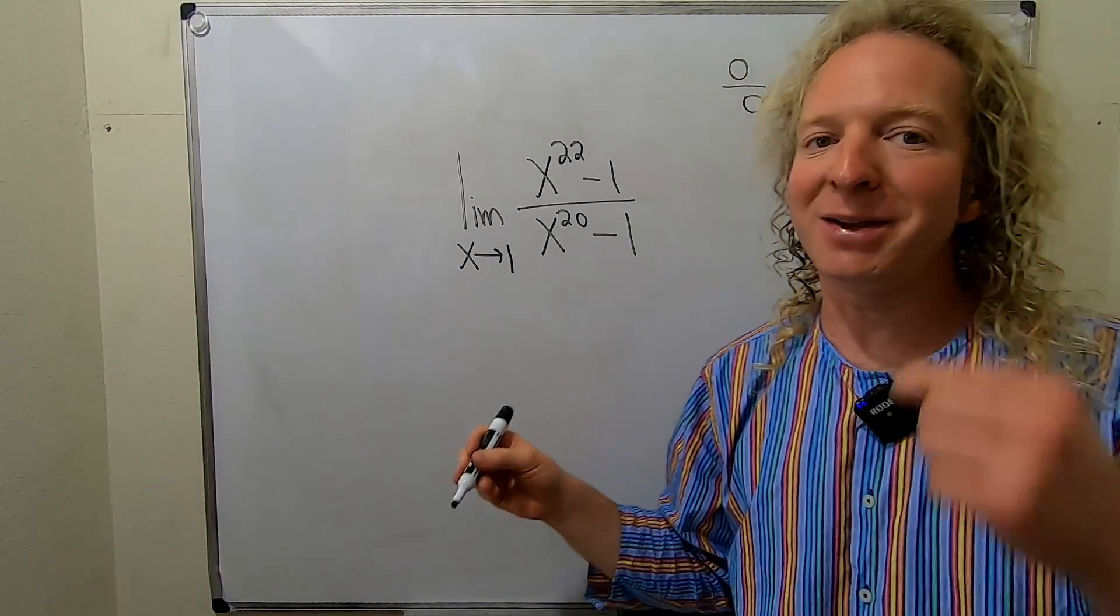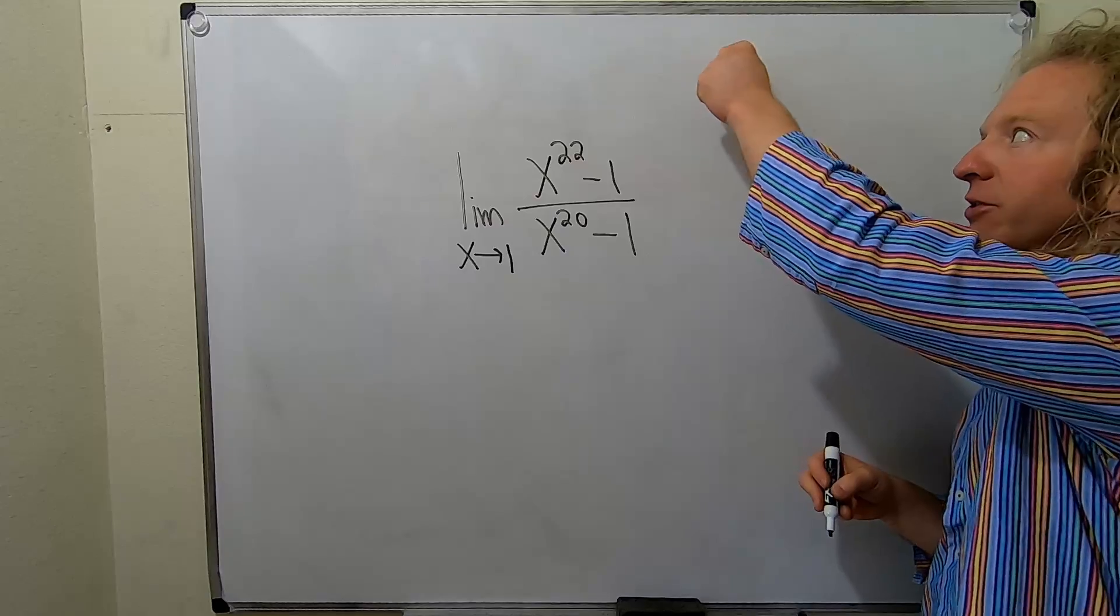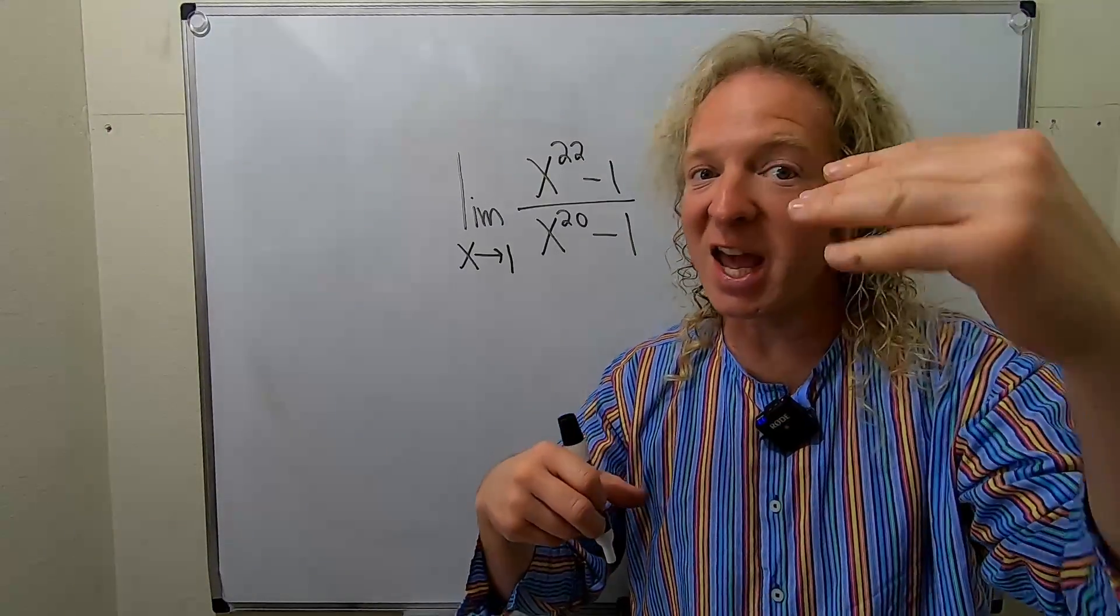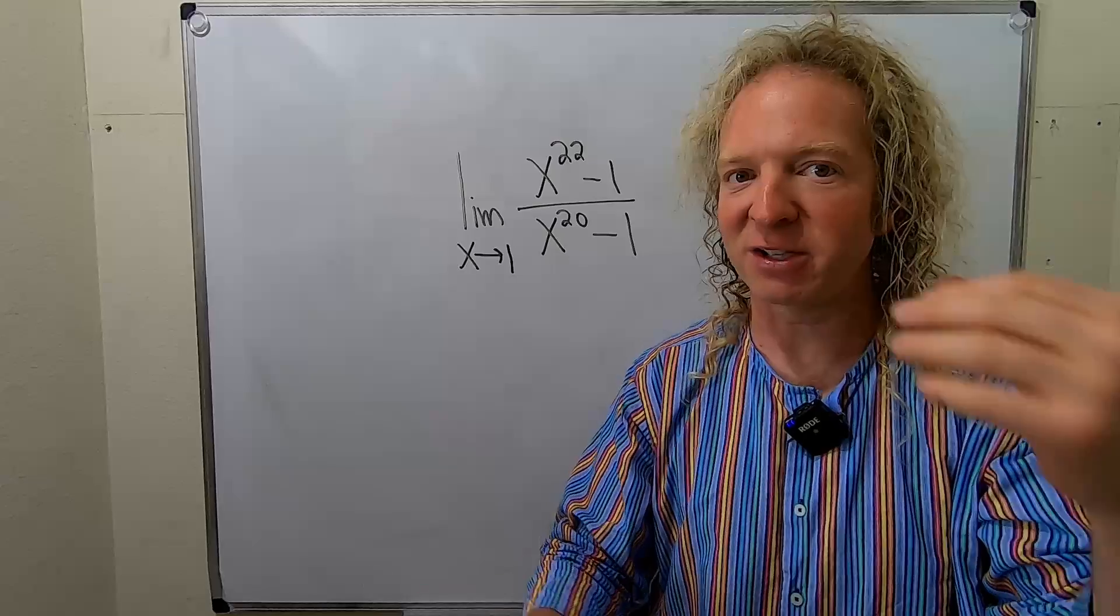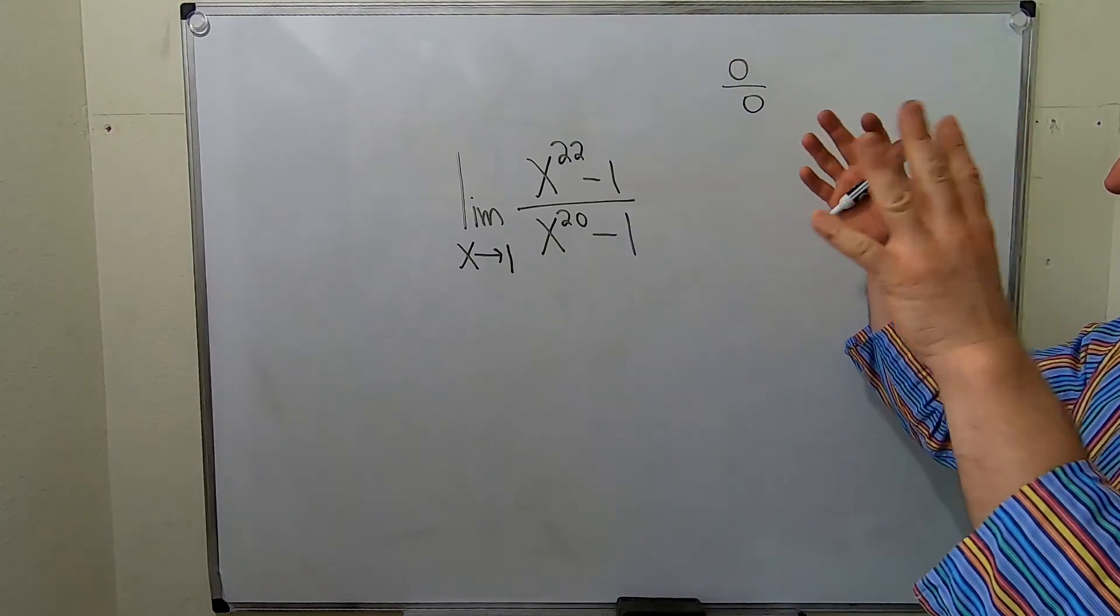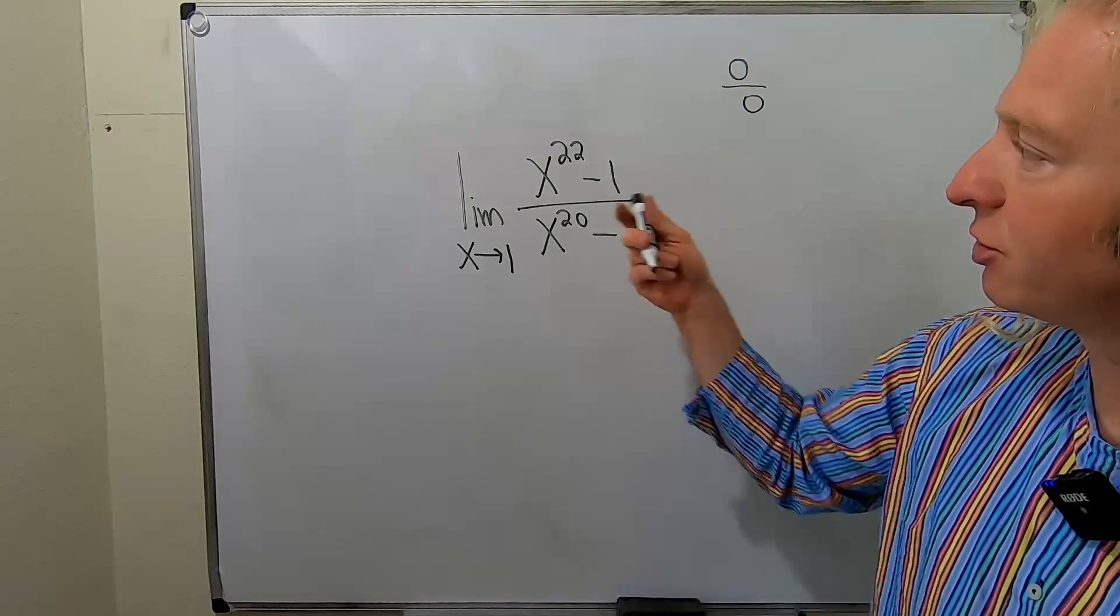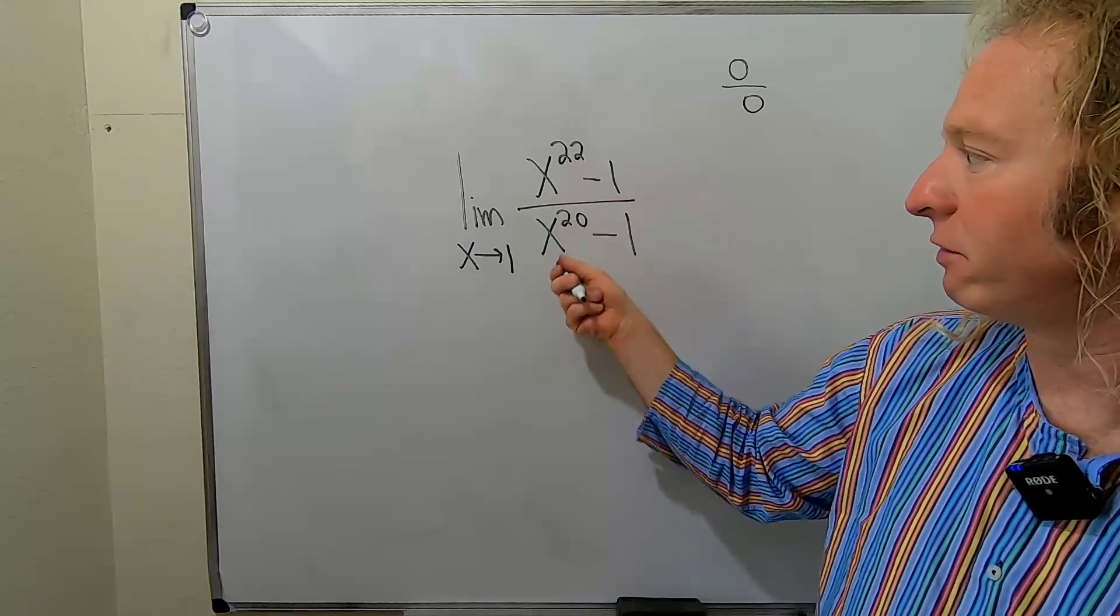This is called an indeterminate form. And in particular, when you have 0 over 0 or infinity over infinity or negative infinity over infinity or vice versa—any of those, so 0 over 0 or any infinity over any infinity—you can use something called L'Hopital's rule. And so to do that, basically you just take the derivative of each piece.